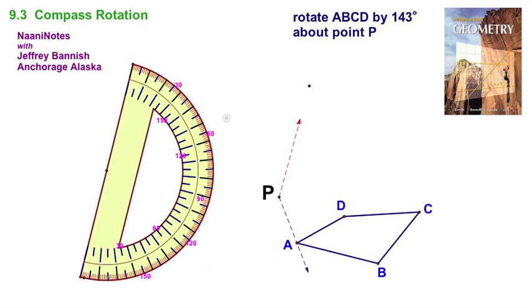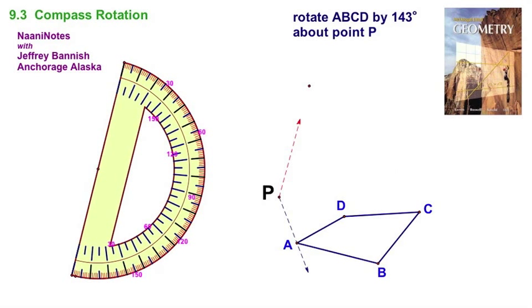I'll move my protractor out of the way. At this point, what you've got is an angle. You've got a 143 degree angle. And we're done as far as the protractor. We've got an angle. All we need is something that starts with a D. Distance. We're going to use the compass.